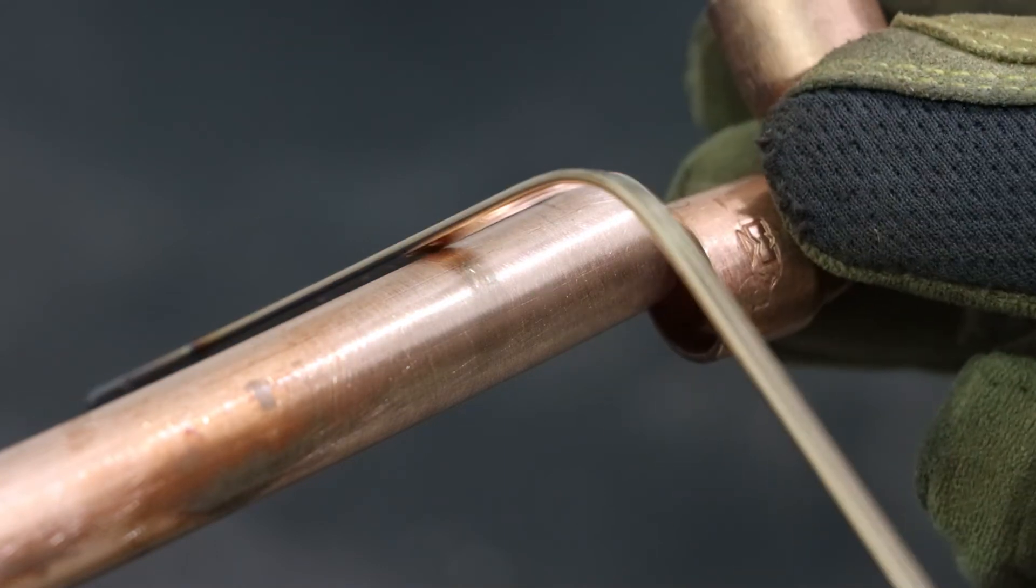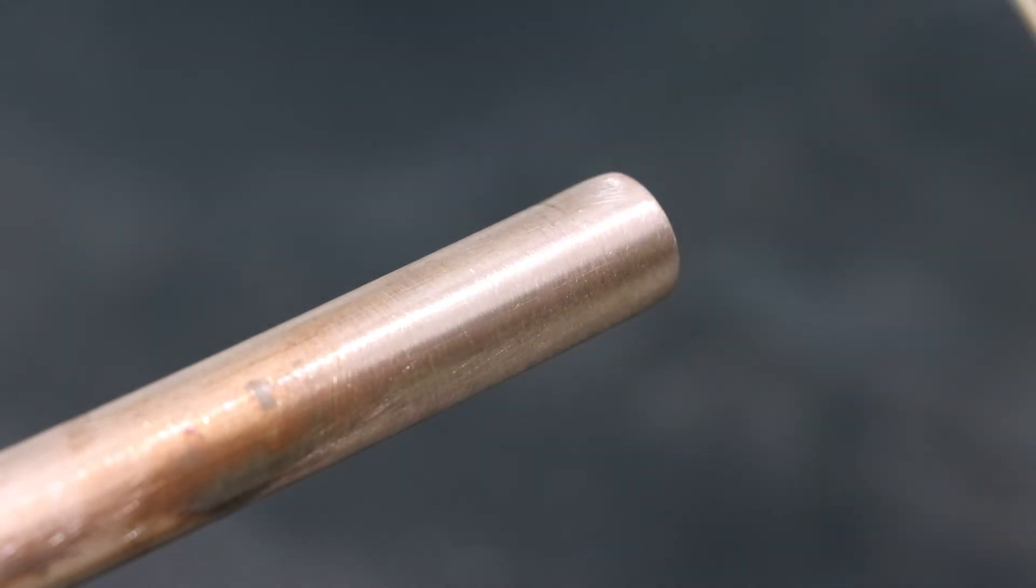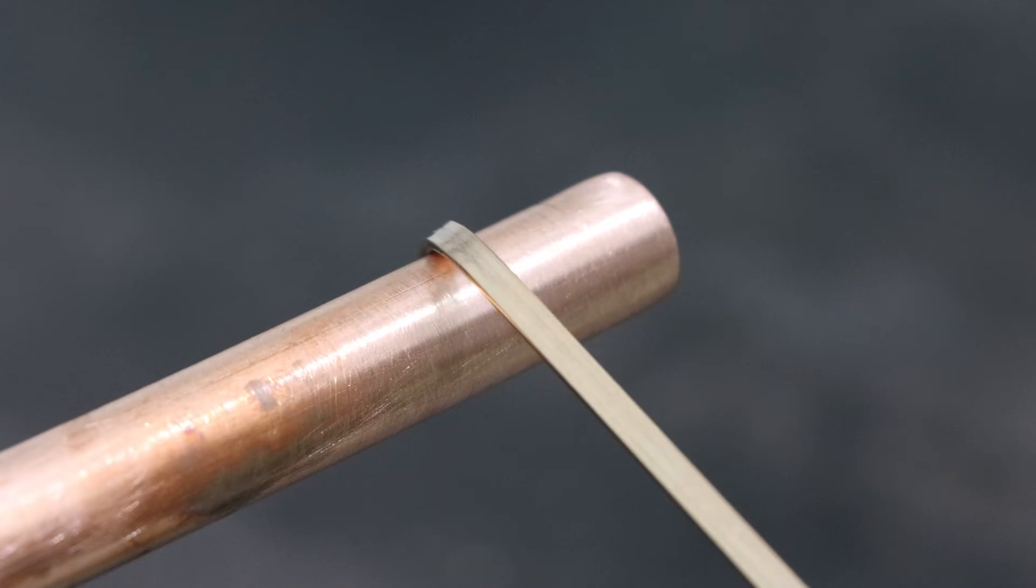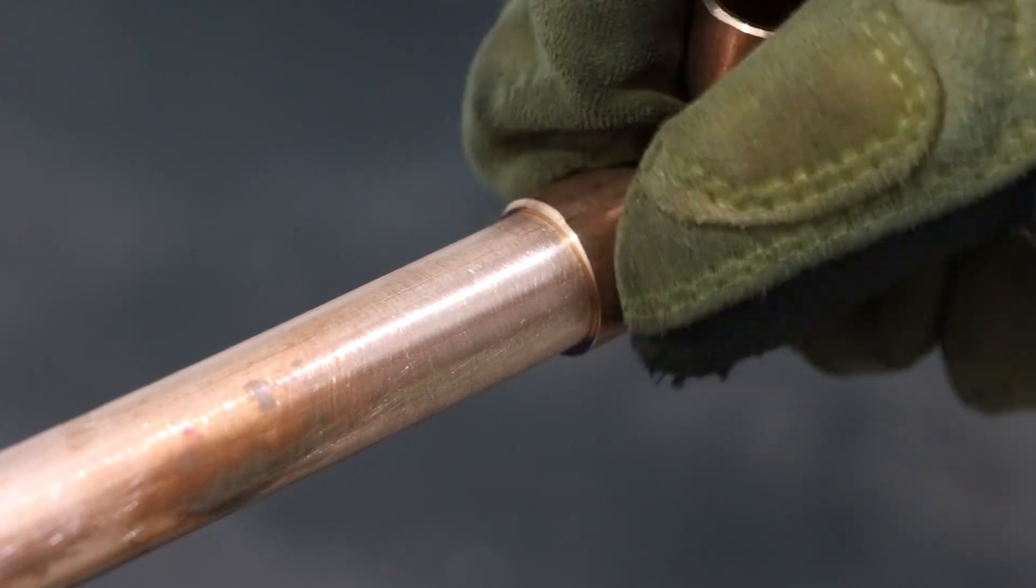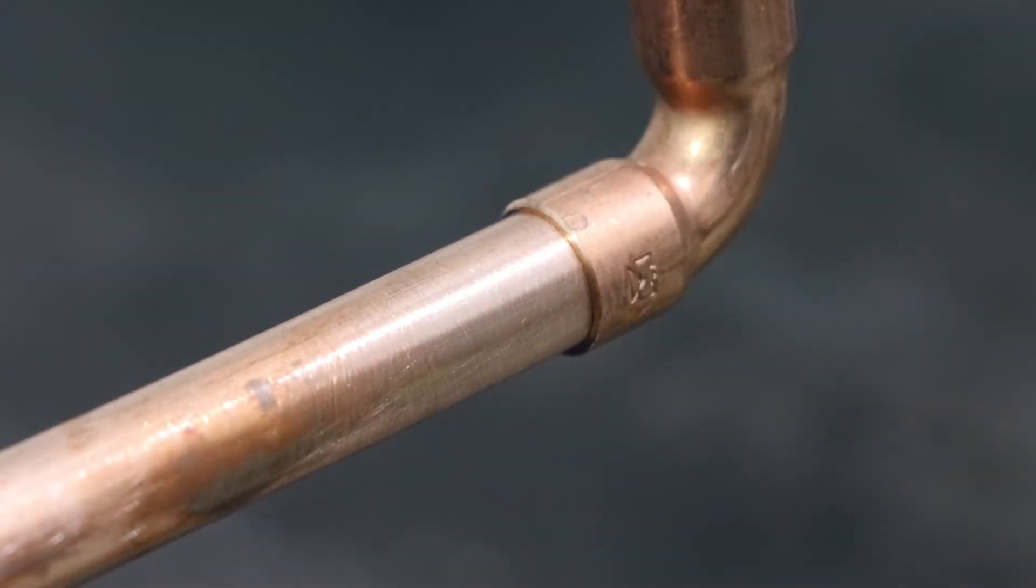To do that, we're going to use this copper braze. This copper braze has its own flux. At this point, if it didn't, you'd be adding a bit of flux to this, but we don't need to because of the brazing rod that we're using.